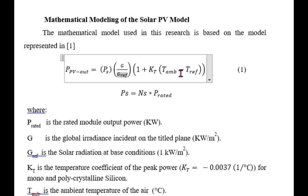1 plus KT, T ambient is the ambient temperature of that location. This is the T reference, for which the rating of that solar panel power is given. KT here is the temperature coefficient of the peak power, for mono or polycrystalline.